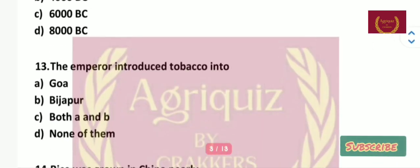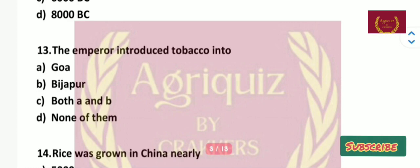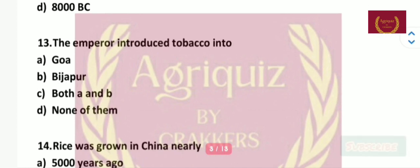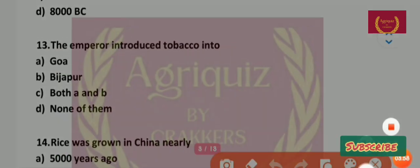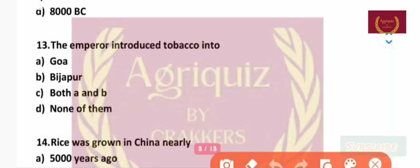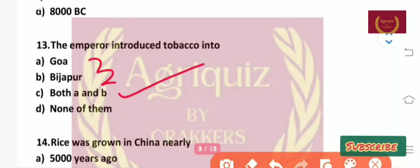Question number 13: The emperor introduced tobacco into — Goa, Bijapur, both A and B, or none of them? The right answer is both A and B. Both Goa and Bijapur are correct, so the right option is both A and B.